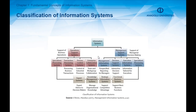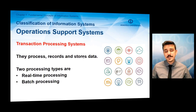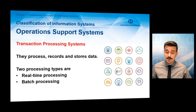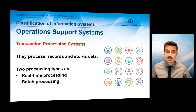After briefly describing system and information system, we can now classify information systems. Information systems in this course are categorized into two classes: operation support systems and management support systems, each of which will be described in the following slides. Operation support systems provide support to the decision processes of operational managers. The first and most fundamental type of operational support system is the transaction processing system.